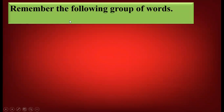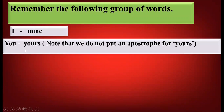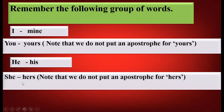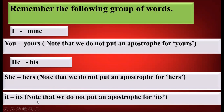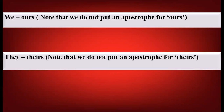Remember the following group of words. For 'I', we can use 'mine' as a possessive pronoun. For 'you', we use 'yours'. Note that we do not put an apostrophe for 'yours'. For 'it', we use 'its' — again, no apostrophe. For 'we', we write 'ours' — no apostrophe for 'ours'. The last one is 'they' — 'theirs', and again we don't use an apostrophe for 'theirs'.